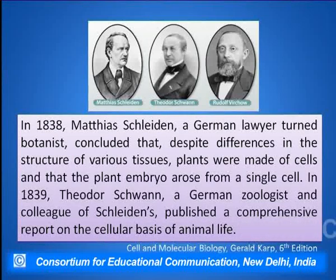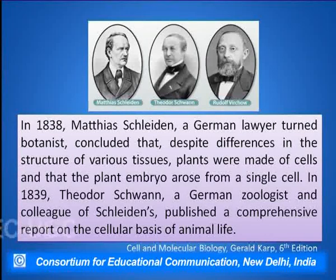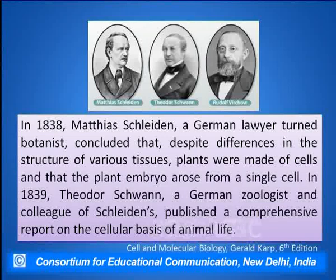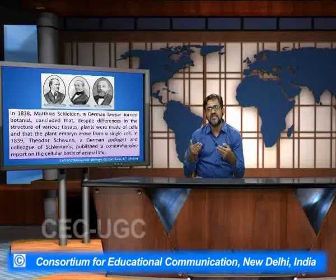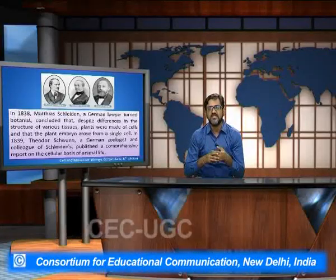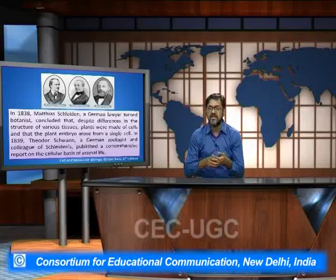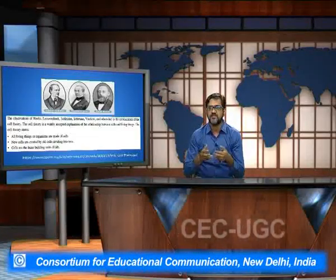In the year 1839, another zoologist and colleague of Schleiden, Schwann, for the first time published a comprehensive report on the cellular basis of animal life. This is how the cell theory started coming up into the picture.